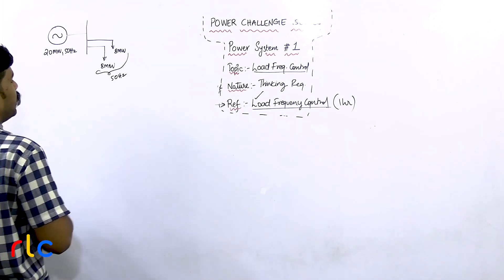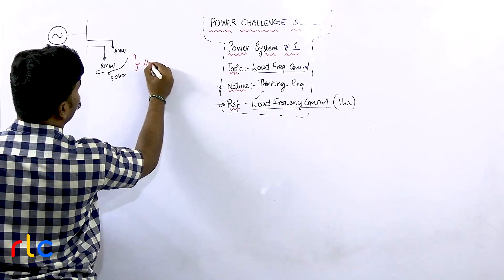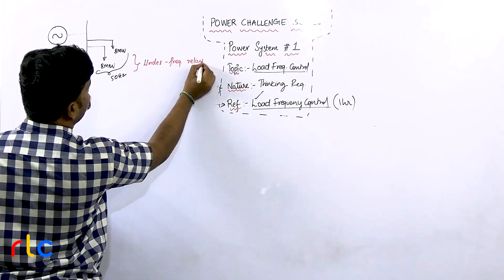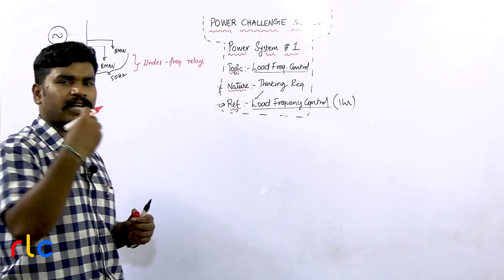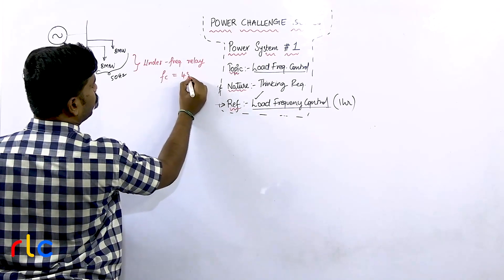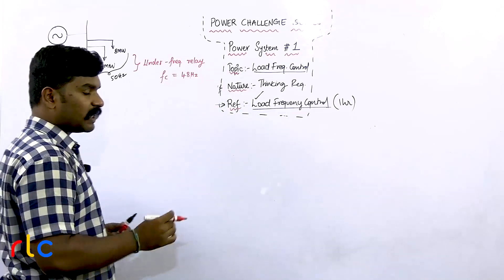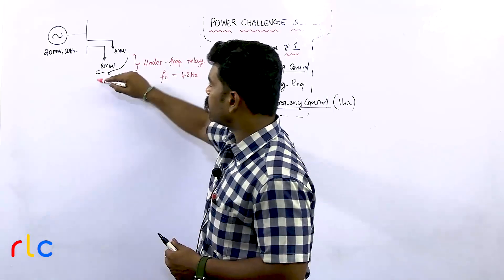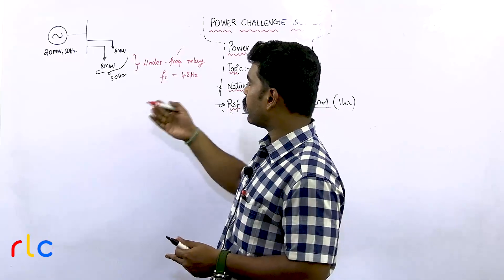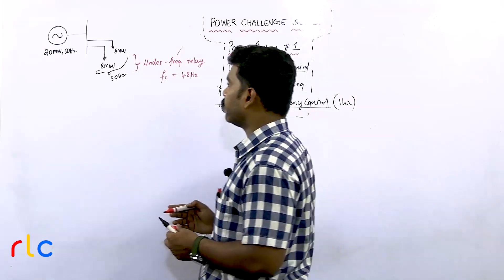Another piece of information given is that one of these loads is fitted with an under-frequency relay. An under-frequency relay is a relay which will disconnect the load — or generator or any apparatus it is intended to protect — if the frequency falls below some specified cutoff frequency. In this question, the cutoff frequency is 48 hertz. That means if the system frequency falls below 48 hertz, one of the two 8 megawatt loads will be disconnected by this under-frequency relay.